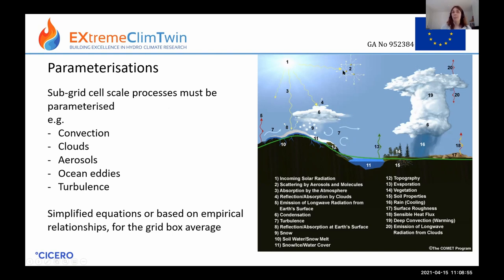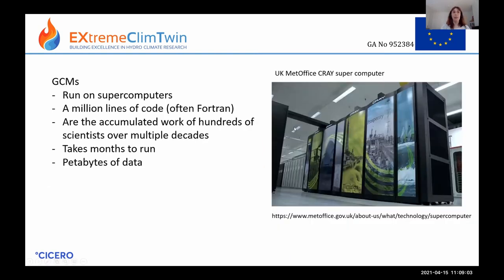Climate models are run on supercomputers — here is the Met Office Cray supercomputer. They consist of around a million lines of code, often in Fortran but sometimes C or C++. A lot of work goes into these models — they represent the accumulated effort of hundreds of scientists over multiple decades. They take a long time to run, depending on resolution, run length, and model complexity, such as whether a land surface or interactive ocean is included, and they generate enormous amounts of data.